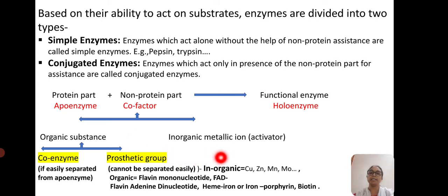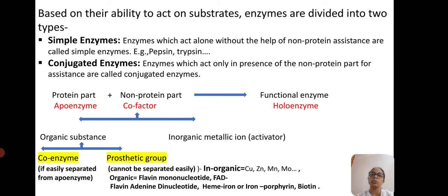Inorganic cofactors include copper, zinc, manganese, and molybdenum. Organic prosthetic group examples include flavin mononucleotide (FMN), flavin adenine dinucleotide (FAD), heme protein, iron porphyrin, and biotin.